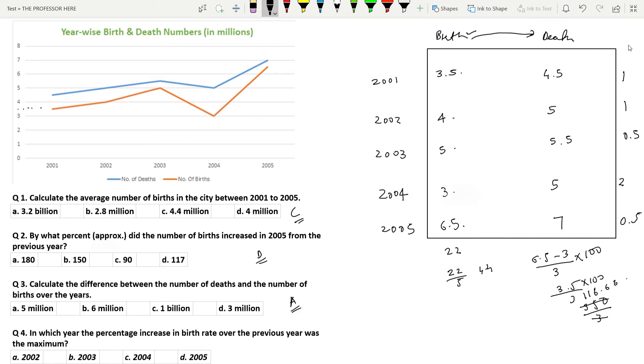Now we come to the last question, question number 4. In which year the percentage increase in birth rate over the previous year was the maximum. So all you have to do is look at the numbers under the birth column. In 2001 it is 3.5, it increases to 4. So only an increase of about 0.5 which will only be an increase of about 20 percentage. From 2002 it increases from 4 to 5. So it's an increase of 1 which is 25 percentage. Now we come to 2003 to 4. It is actually a decrease so you don't have to calculate that.